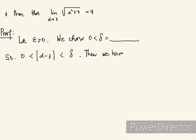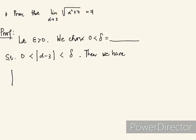Then we manipulate the absolute value of f(x) minus L. So our f(x) is the square root of alpha squared plus 7. So this becomes the absolute value of the square root of alpha squared plus 7 minus 4.